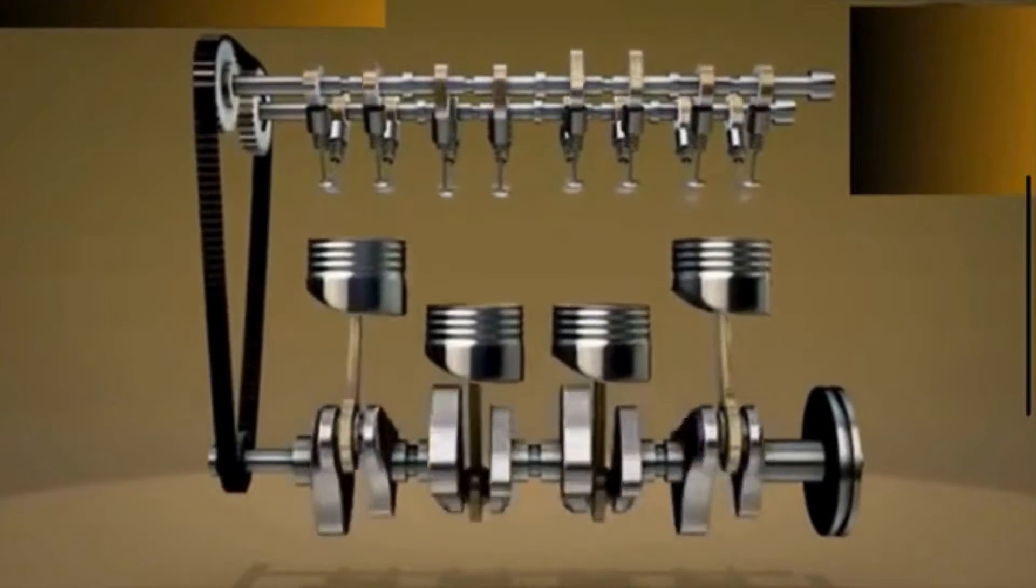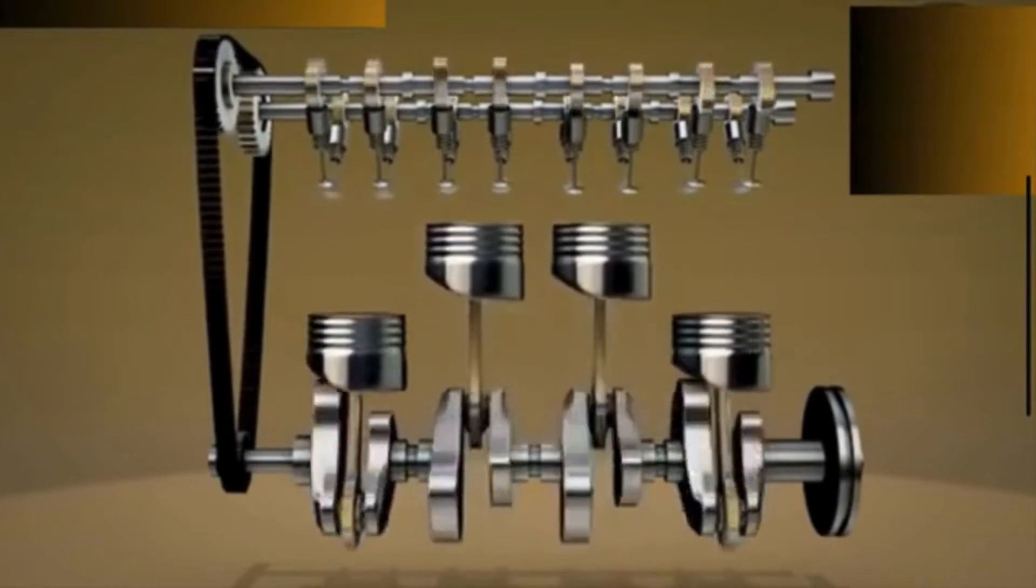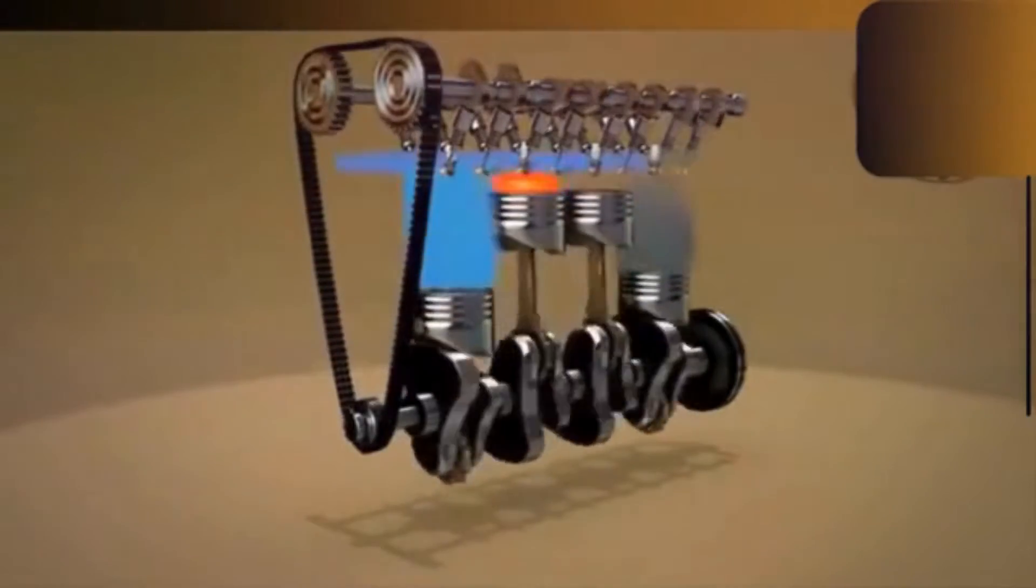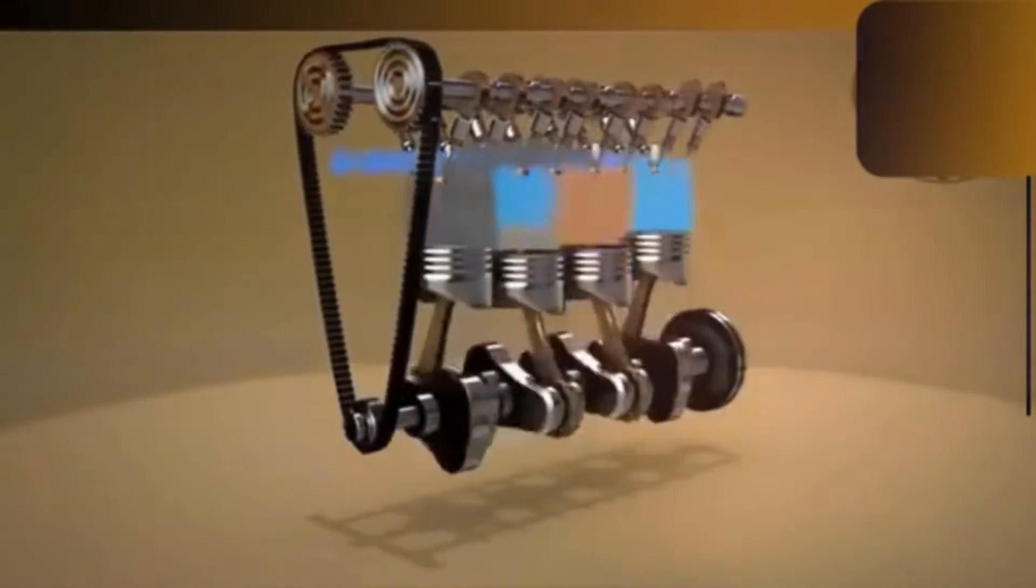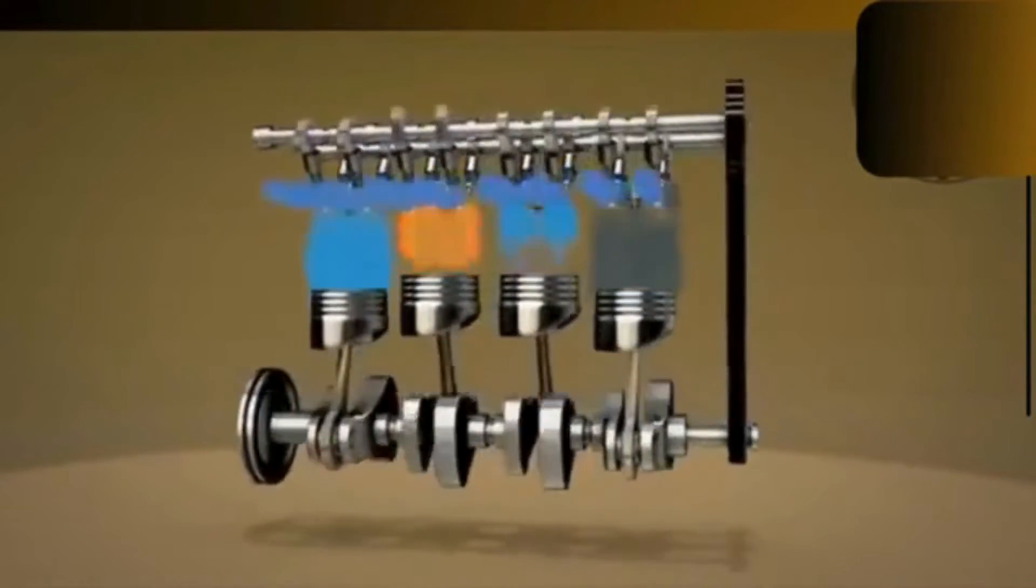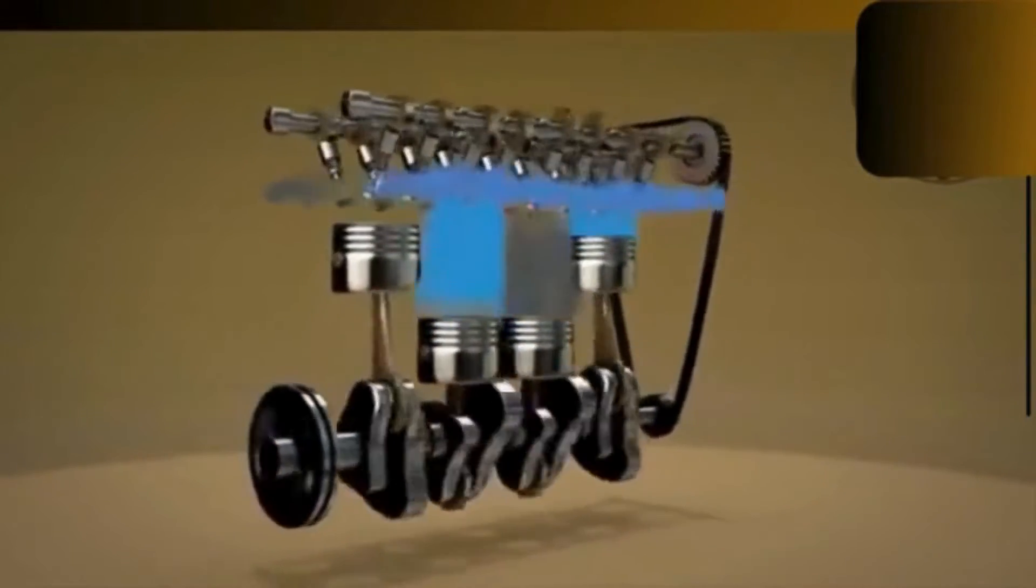The camshaft is responsible for controlling the opening and closing of the engine's intake and exhaust valves. Its primary function is to precisely time the operation of these valves in coordination with the engine's pistons, to facilitate the intake of air-fuel mixture into the cylinders and the expulsion of exhaust gases.